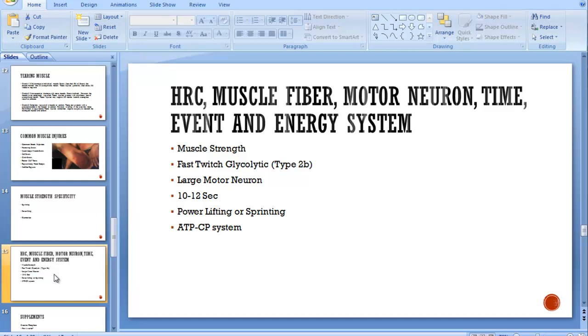Here we're linking up all the major components of muscle strength and how they're all interrelated. Muscle strength: we're talking about fast twitch glycolytic muscle. That's a type 2B muscle, large motor neuron, really fast contraction rate. 10 to 12 seconds, you'll fatigue. You're using the ATP-CP system. This is powerlifting and sprinting.